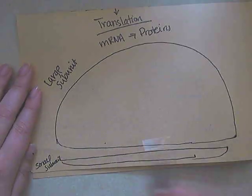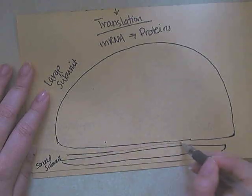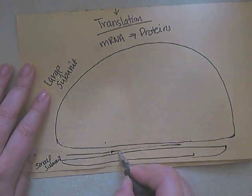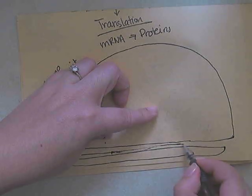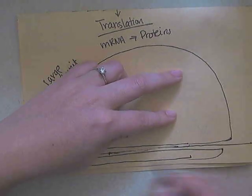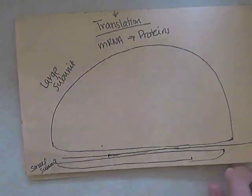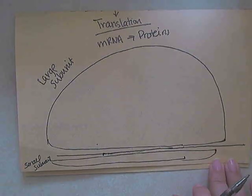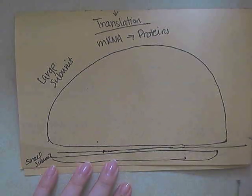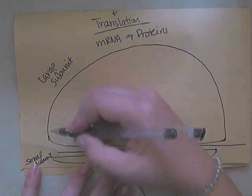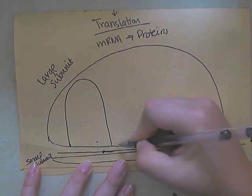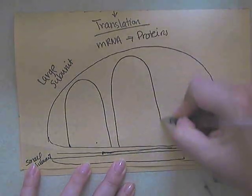In between these two subunits, the mature mRNA is going to pass through, and the mRNA will be read in triplets called codons. The codons are the triplets of the mRNA, and the codons will be read in three different spots of the large subunit.